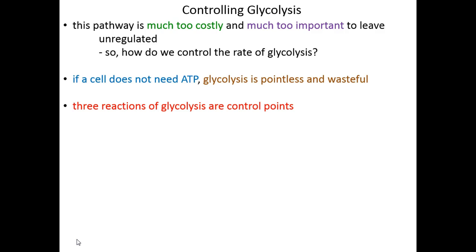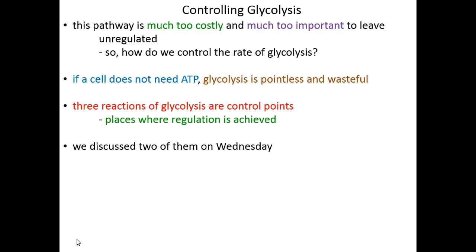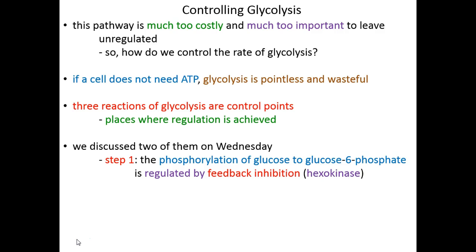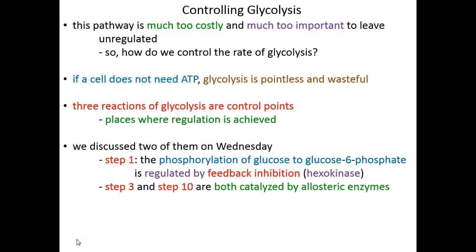The regulation of glycolysis really boils down to three reaction steps — three control points that the cell uses to control glycolysis. Two of them were discussed in the last lecture series. Step one is our first control point. We talked about feedback inhibition, where the enzyme that controls step one, hexokinase, phosphorylates hexose sugars. Hexokinase is regulated by its own product, so glucose-6-phosphate turns hexokinase off, and an absence of glucose-6-phosphate allows hexokinase to be active.